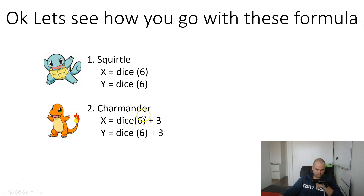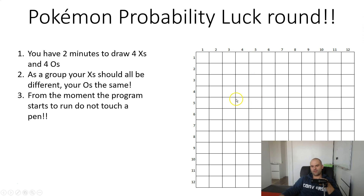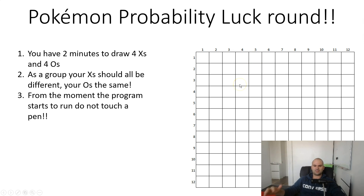Charmander's X is dice-6 plus 3, and Y is the same coordinate. What students are meant to figure out — and they don't get it on the first try but eventually do — is that Squirtle lands in up to a 6-by-6 square, while Charmander lands from 4 to 9 on X and the same Y range. Students need to figure out these two regions overlap and place their traps in that overlap zone.